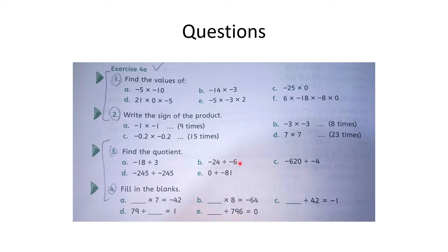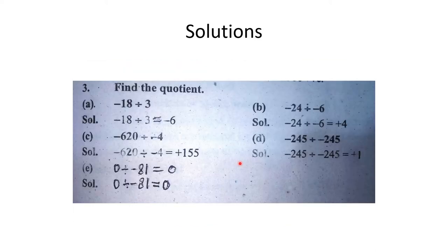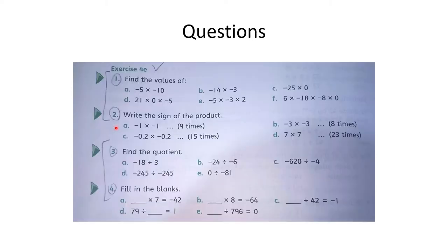Minus 24 divided by minus 6: minus minus hoga to plus. 6 fours are 24, to answer plus 4 aayega.